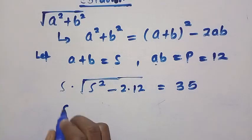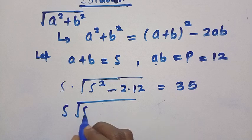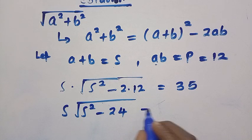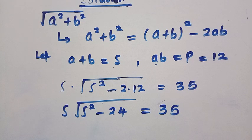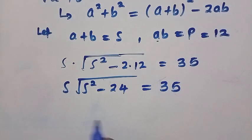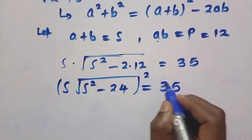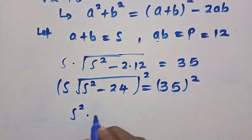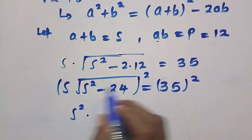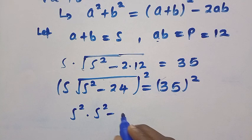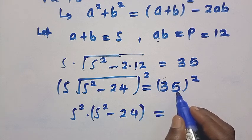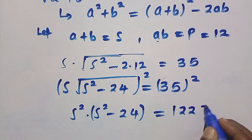So we have X times the square root of X squared minus 24 equals 35. Next, we square both sides. X squared multiplied by X squared minus 24, equals 35 squared, which gives us 1225.